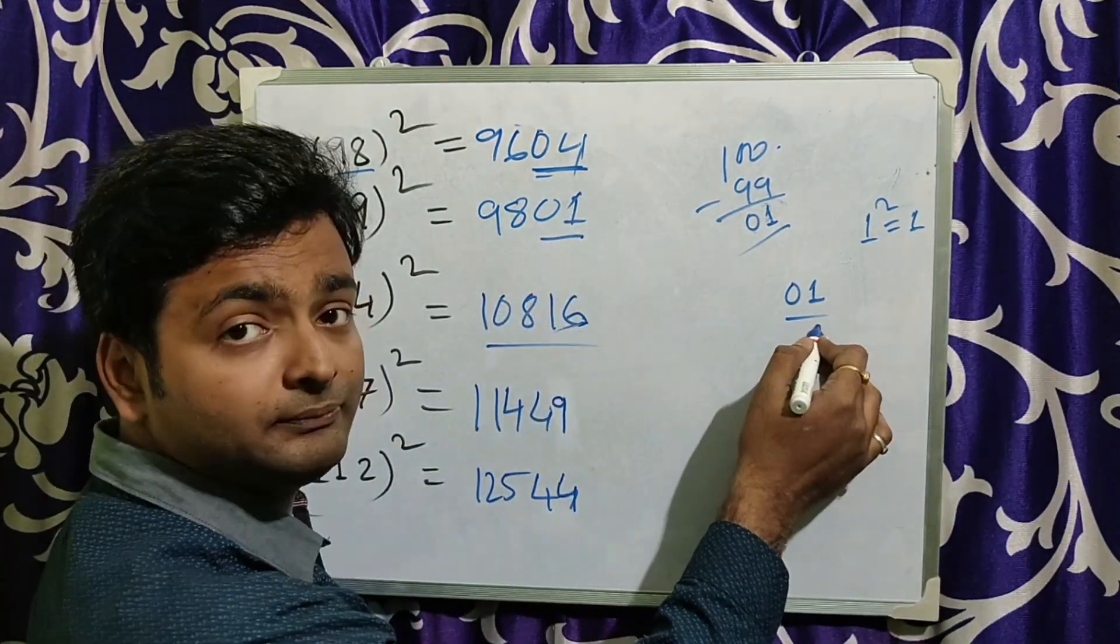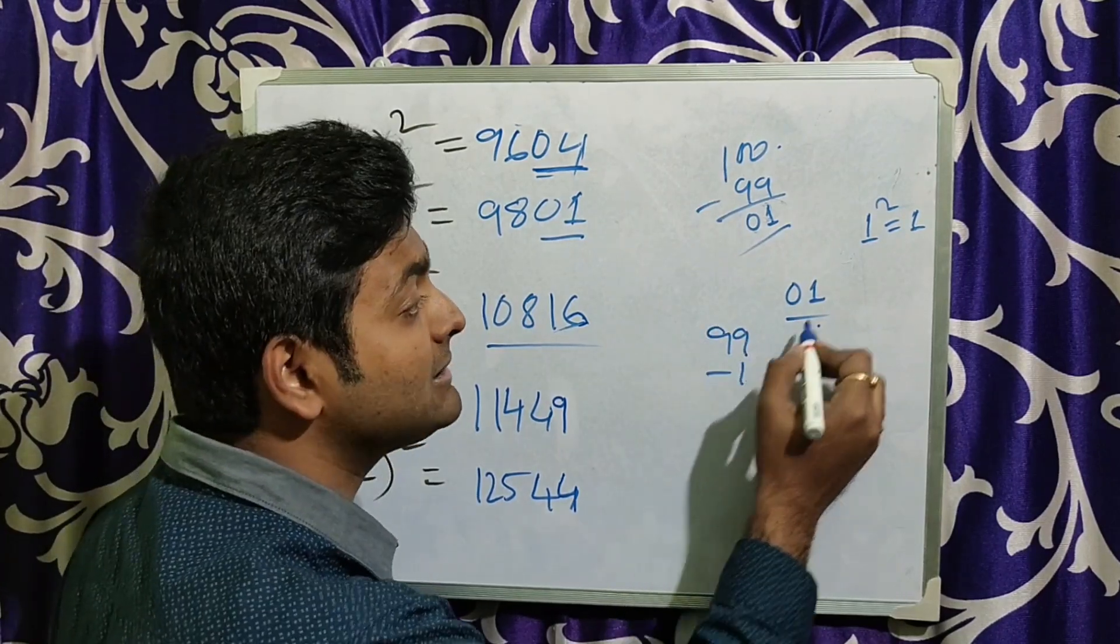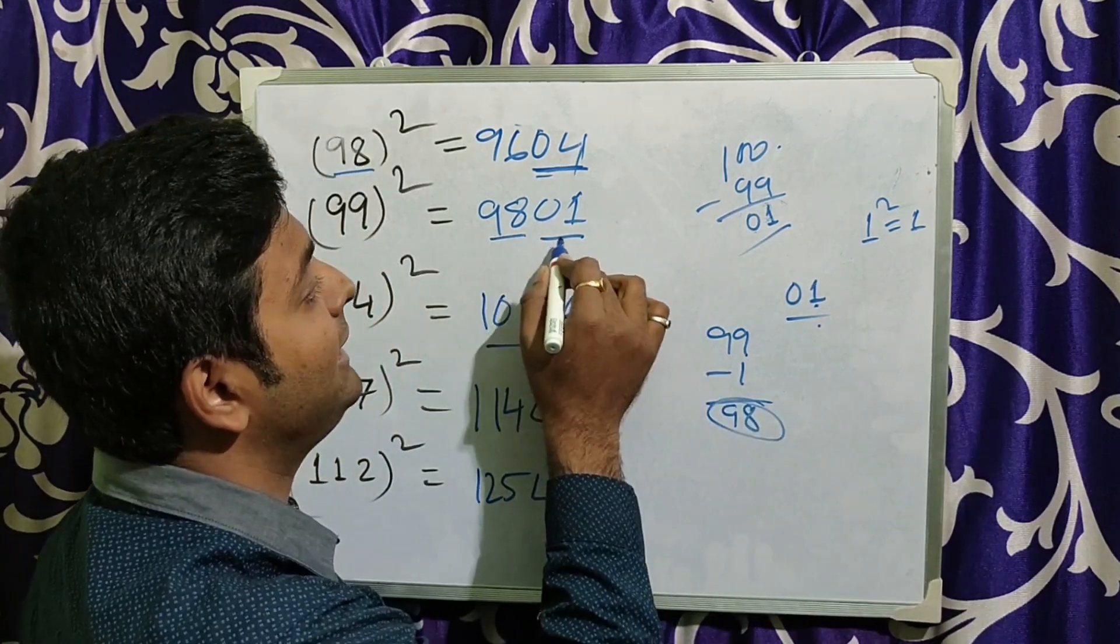0, 1 I have to write. Then that 99 is the number given minus that 1, you will get 98. So 9801.